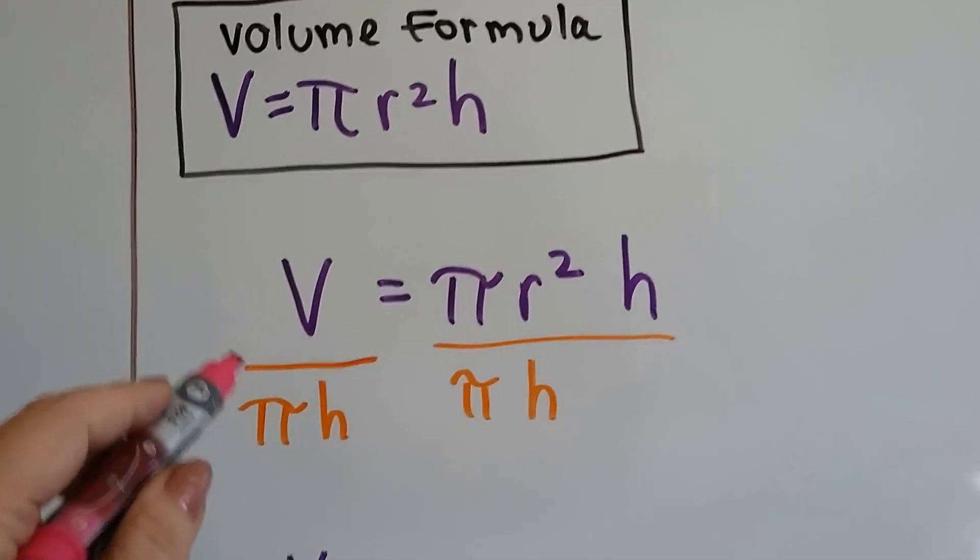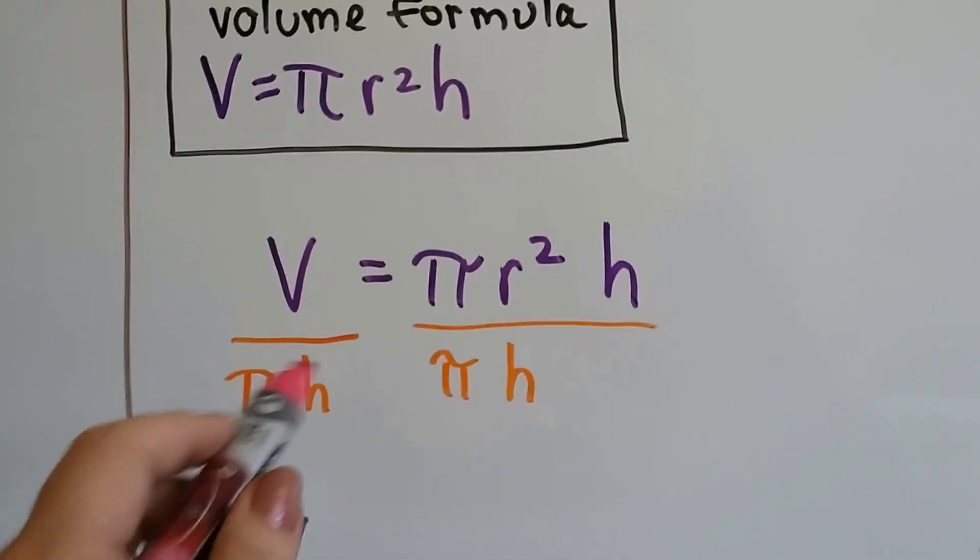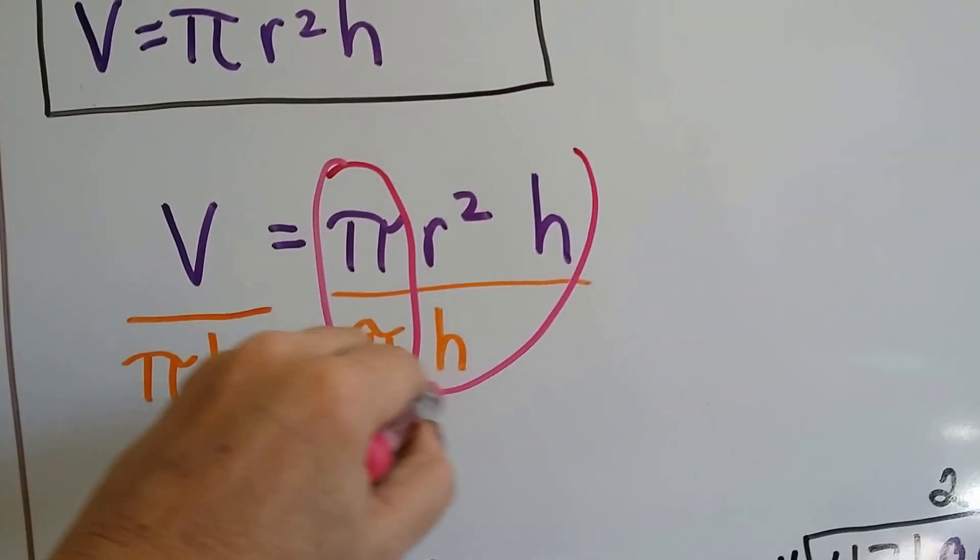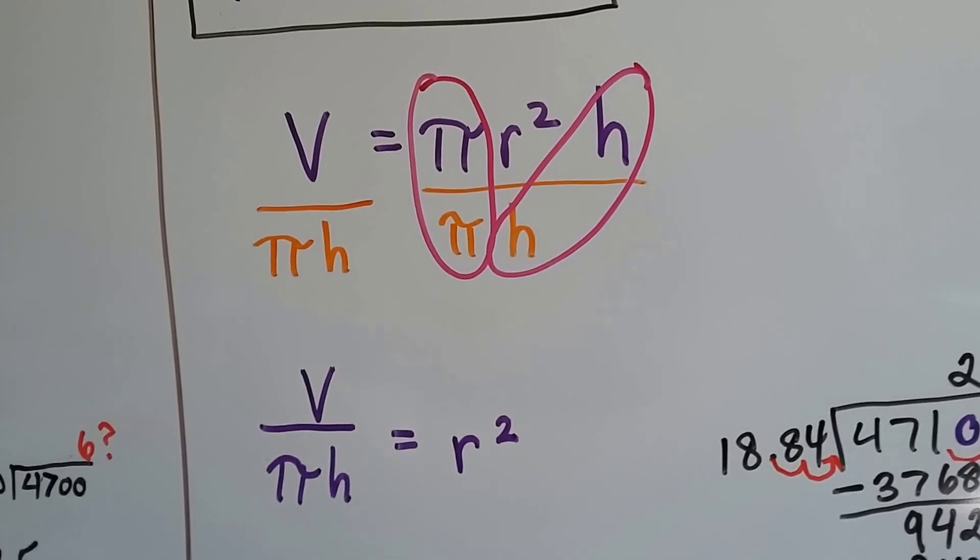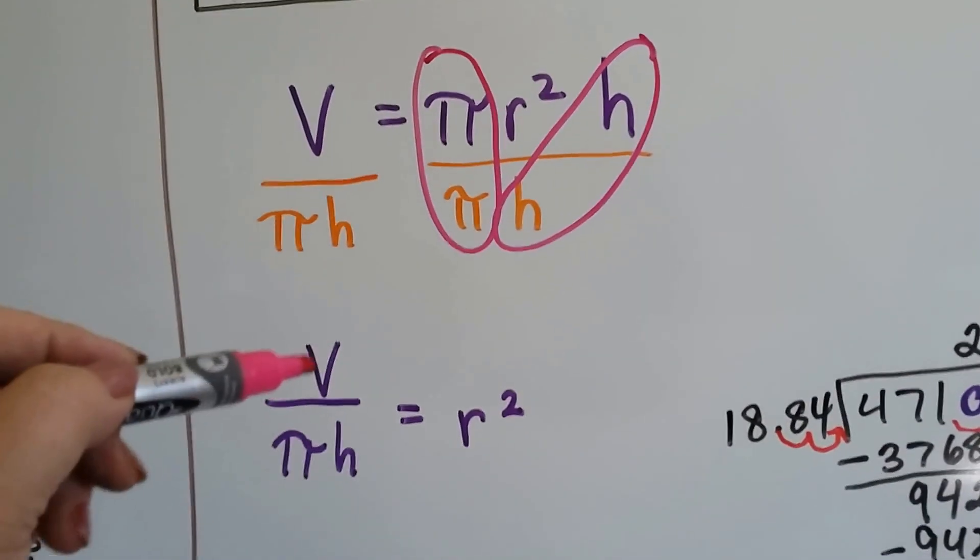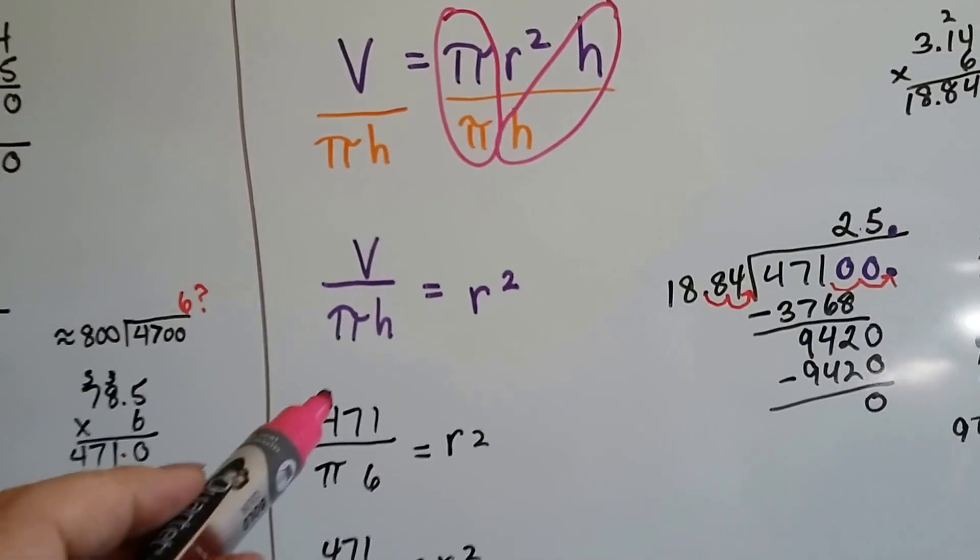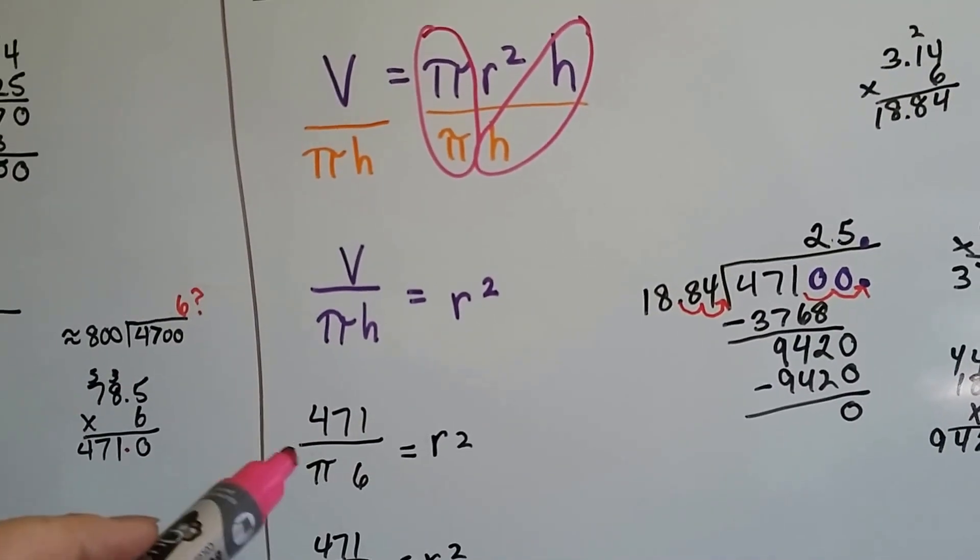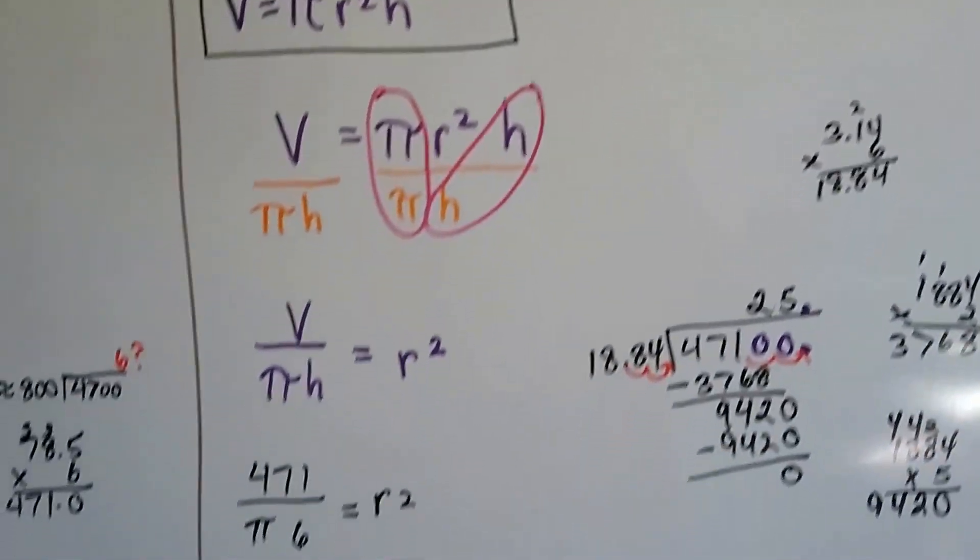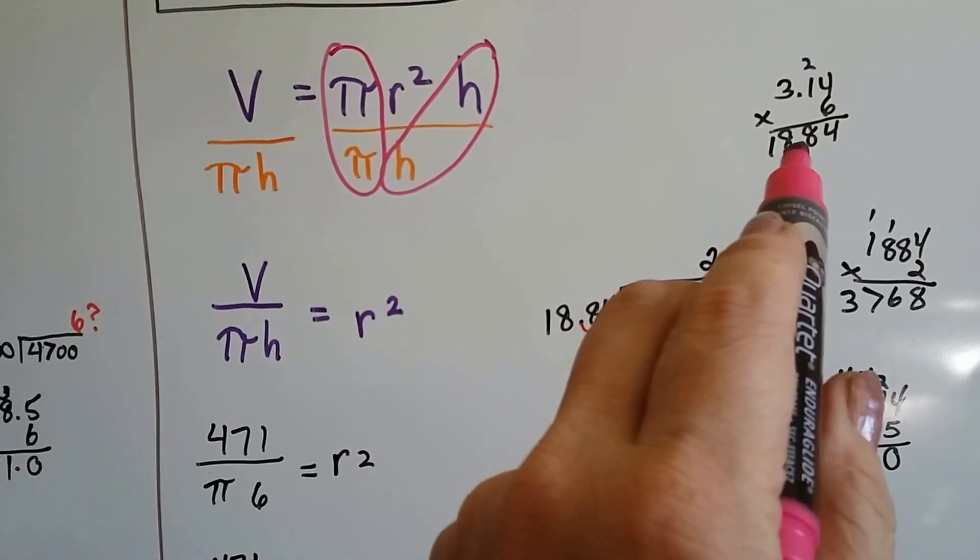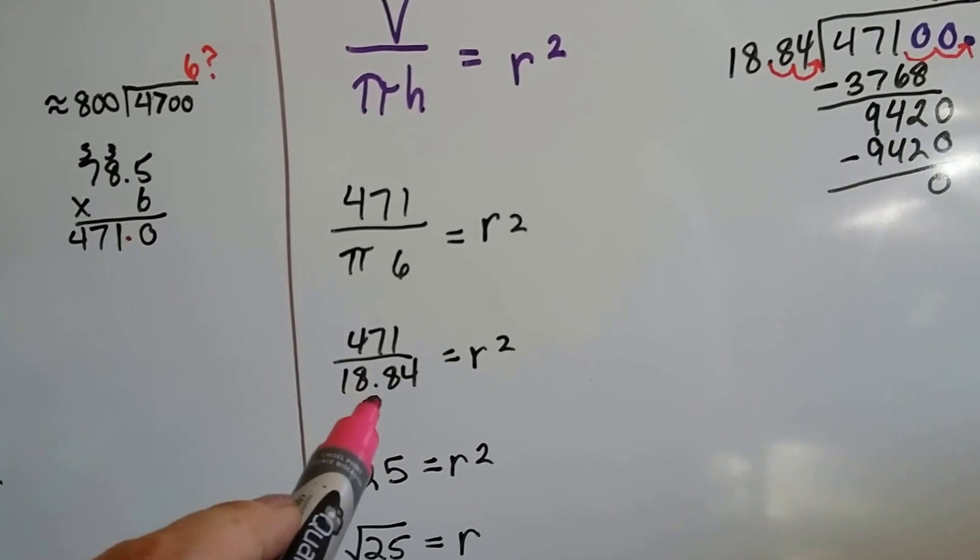By doing that, we end up dividing both sides of this volume formula by π and by the h, leaving the radius alone so that it's on one side of the equal sign. So now we've got volume over π times h, times the height. The volume is 471, so that's going to be over π and 6, because we know that the height is 6 inches high. π times 6 is 18.84. So now we've got 471 over 18.84.